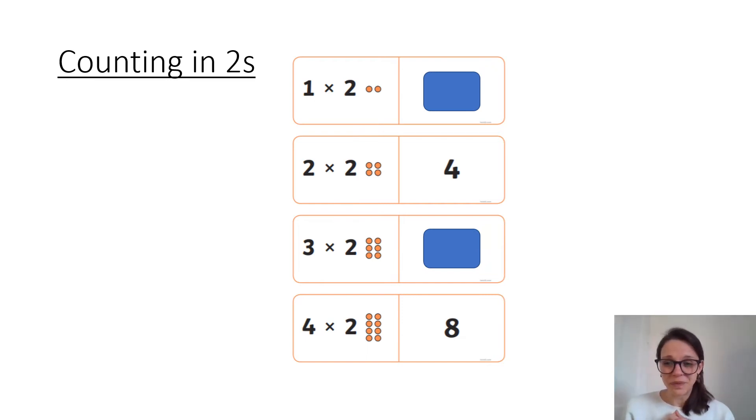How did you get on year one? So this is our two times table. It starts with two. Two, four, six, eight. And what would come next? Ten of course. Well done everybody.